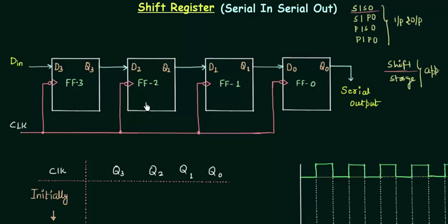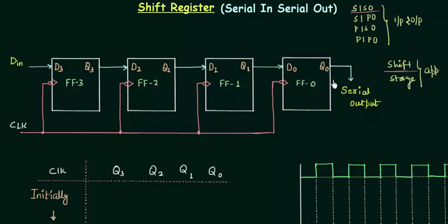I have used four D flip-flops, and the clock is given to all flip-flops simultaneously. We have negative edge triggered flip-flops. Din is the input data connected to D3, the input of flip-flop 3. Q3 is connected to D2, Q2 is connected to D1, Q1 is connected to D0, and Q0 gives us the serial output. Initially all outputs Q3, Q2, Q1, and Q0 are 0.